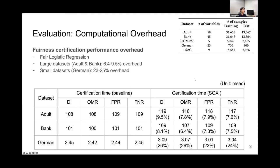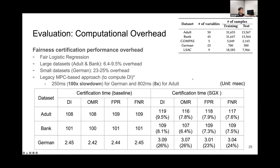We also compare with a legacy MPC-based approach from another paper using a similar setting. To compute disparate impact (DI) for the German dataset, the MPC-based approach takes 250 milliseconds, and for the adult dataset it takes 800 milliseconds — much larger than our numbers.